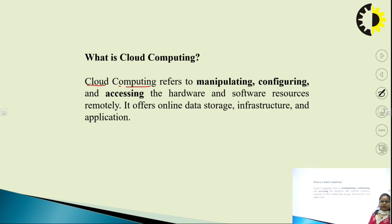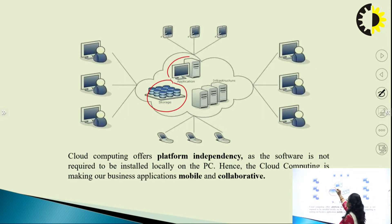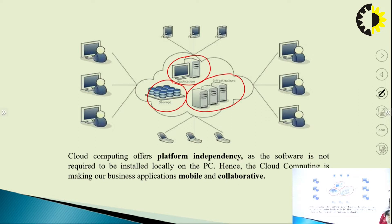Cloud computing also offers online data storage space, infrastructure, and applications. If I am talking about cloud storage, this is an architecture through which we can do cloud computing. We have three parameters: first is storage, second is application, and the third is infrastructure. This is how we generate a platform through which we can access any amount of data. Cloud computing also offers platform independency, as software is not required to be installed locally on the PC.